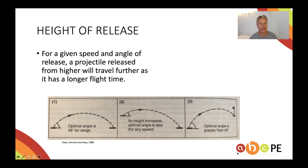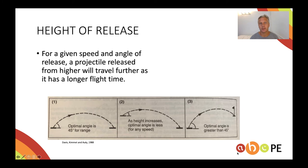Here we're speaking about heights of release, and you can see in the diagram exactly what I was talking about on the last slide. Generally, for any given speed and angle of release, a projectile released from a higher vantage point is going to travel further. The reason for that is it simply has a longer flight time — it's in the air longer before it hits the ground and stops its horizontal distance.